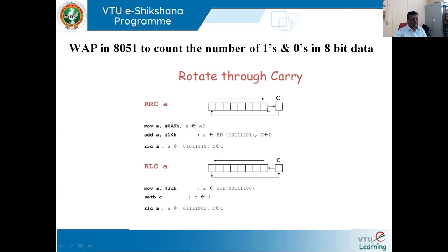Looking at the functioning of the RRC rotate instruction: we have an eight-bit data, and if using rotate right through carry, the data at the LSB will go into the carry flag, the content of the carry flag will come to the MSB, and every other bit shifts right — from bit 7 to bit 6, bit 6 to bit 5, and so on down to bit 1 to bit 0.